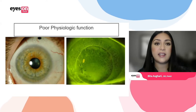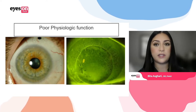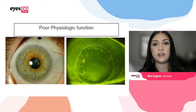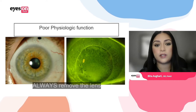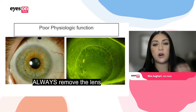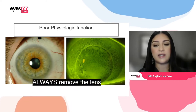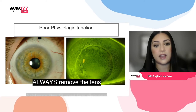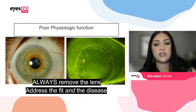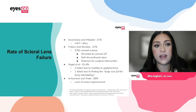If you get things like corneal edema, this is obvious poor physiologic function and not sustainable long-term. The point of this is to always remove the lens — I truly cannot stress that enough — and always address both the fit and the disease of the eye.